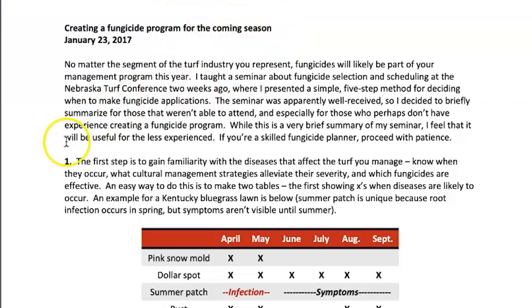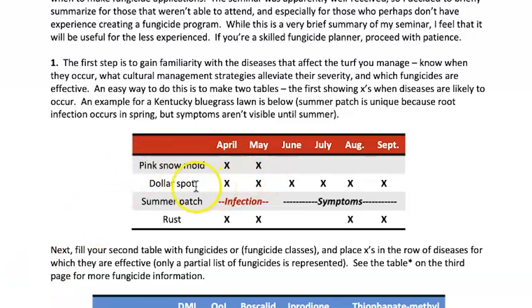Going over to the University of Nebraska's website, they give a nice step-by-step guide on how to build a fungicide program for your needs. The first step — gain a familiarity with the disease that affects the turf you manage. If you know you've got a particular disease in your yard and it's coming, you'll know what to buy and how to effectively prevent it from overtaking your yard. Remember, an ounce of prevention is worth a pound of cure.